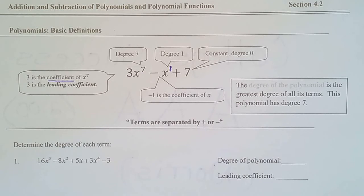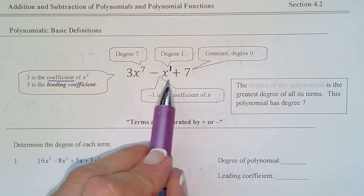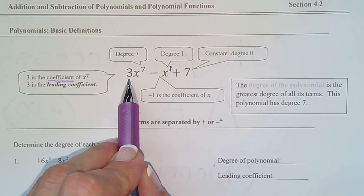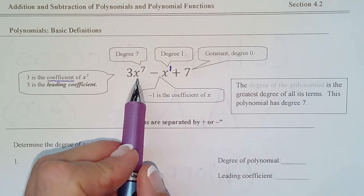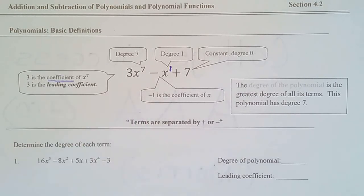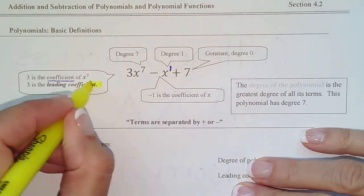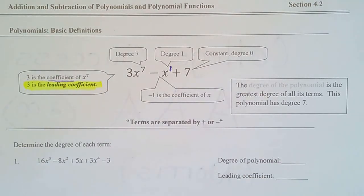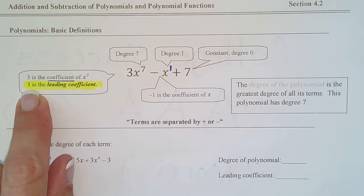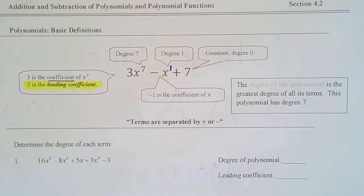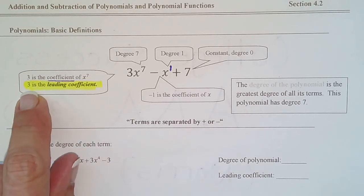We've been using the word 'coefficient' throughout the course. The coefficient is the number in front of the variable term, so we say three is the coefficient of x to the seventh. Since x to the seventh is the highest power in the problem, we also say three is the leading coefficient. You'll see in the next class that's super important because it determines whether the parabola cups up or cups down, whether the s-curve rises to the right or left.